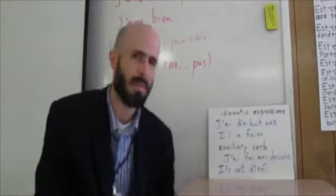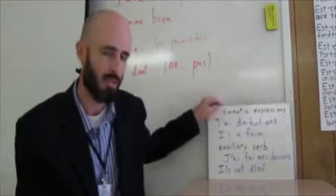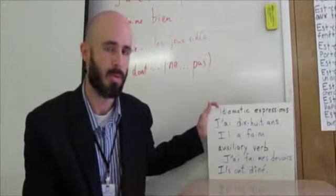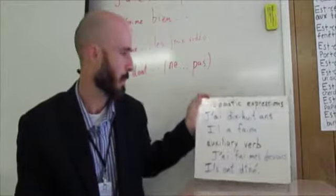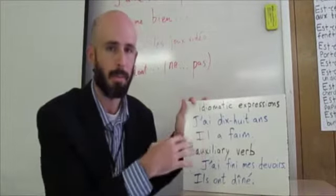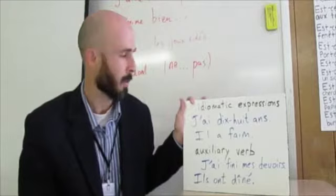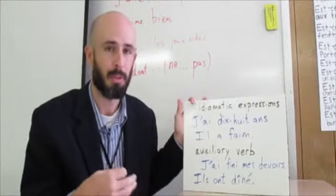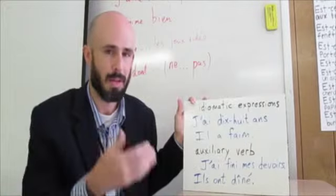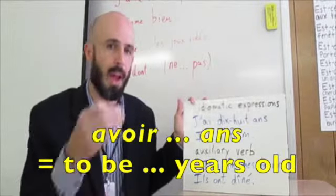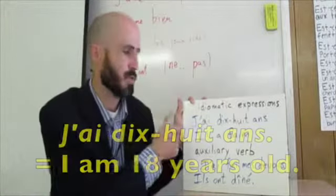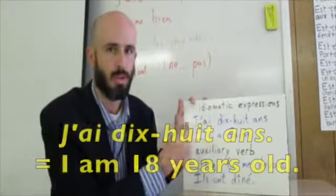So this is one of the most frequently used verbs in French. So please, take the time to memorize those forms. We're going to use these in very many idiomatic expressions. One you already know is the French manner of expressing one's age. We're saying in French to be a certain number of years old is avoir. For example, j'ai dix-huit ans.